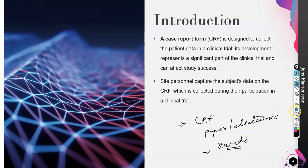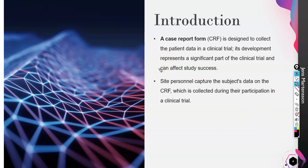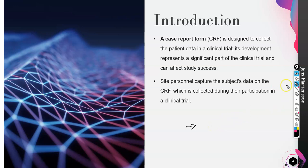There are two famous types of CRF: electronic and paper-based. Paper CRF is the traditional way of data capture and a better option when studies are very small. Electronic CRFs are specifically used when the data and study are very large — that is what we will discuss in the next video.